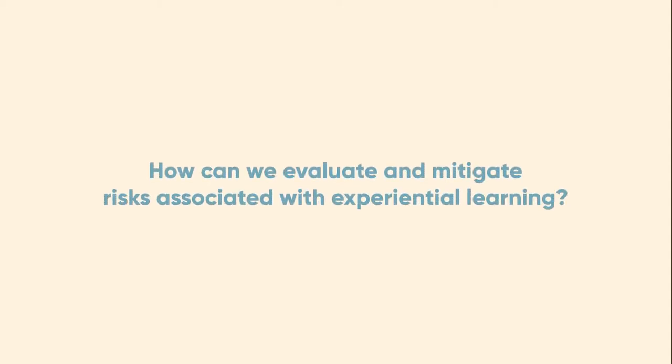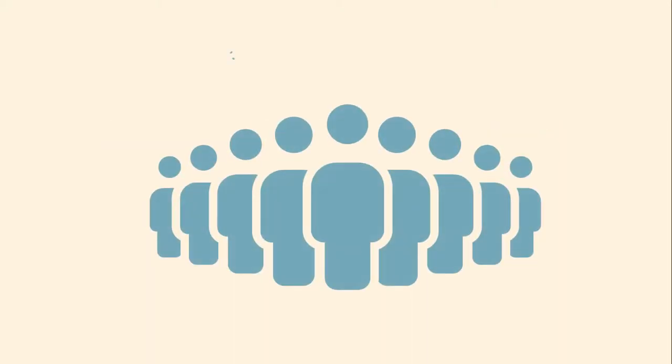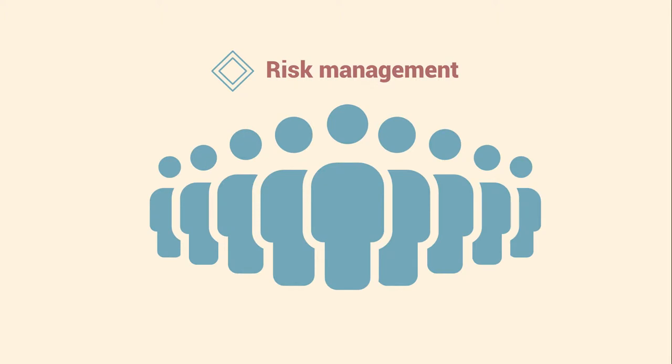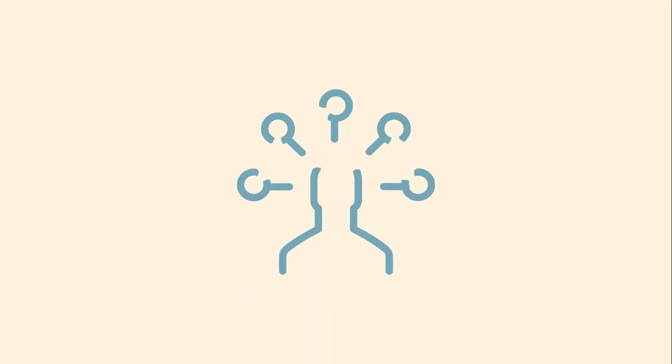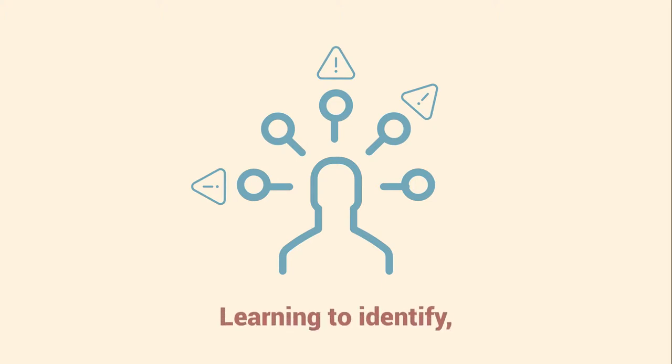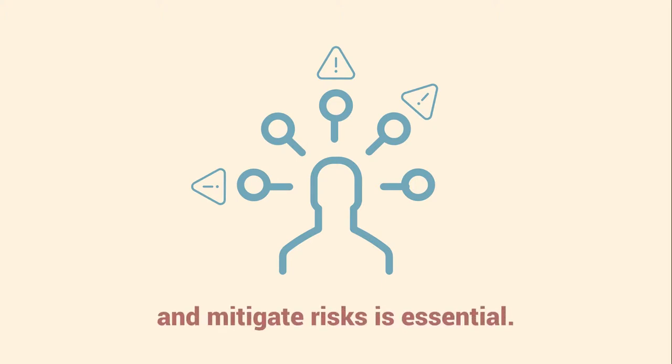How can we evaluate and mitigate risks associated with experiential learning? Within any organization, risk management takes a high level of priority. Within the context of experiential learning, there may be a variety of factors impacting whether adequate focus is placed on risk. Giving consideration to the risks that may be attached to EL activities is important — both the risks that may impact students and the risks they may impose on others. Learning to identify, evaluate, and mitigate risks is essential.